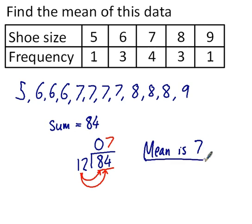And that's how to find the mean from a frequency table. Simply extract the numbers out of the frequency table, put them into a list, and then add them all up and divide by the sum.